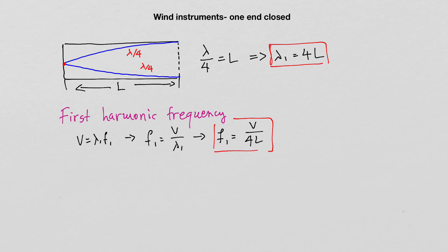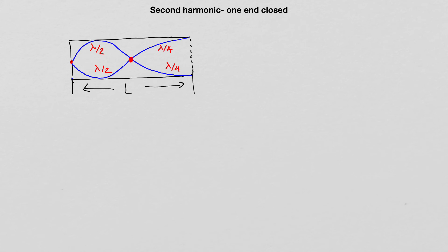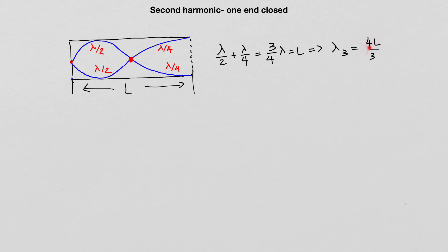Now let's consider the next harmonic. The next standing wave pattern has two nodes inside the pipe and an antinode at the opening. The branches are λ/2, λ/4, λ/4, and λ/2. So half plus quarter of the wavelength — three quarters — fits the pipe length. Therefore the wavelength, labeled λ₃, is equal to four times the length of the pipe divided by three.